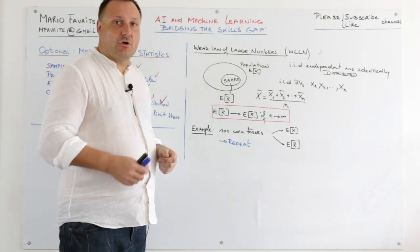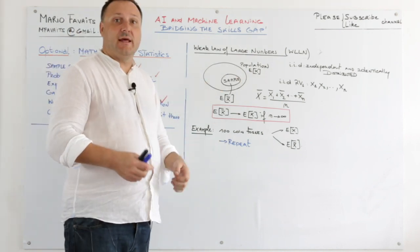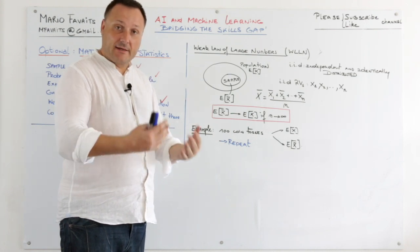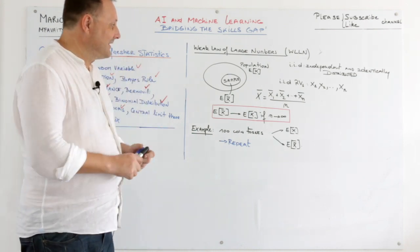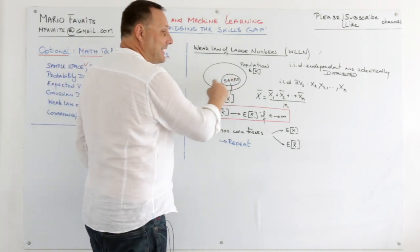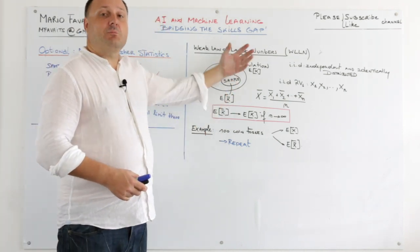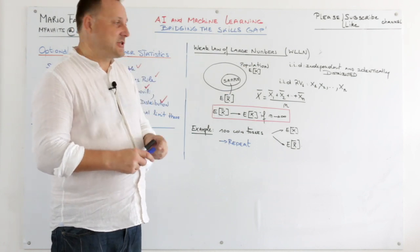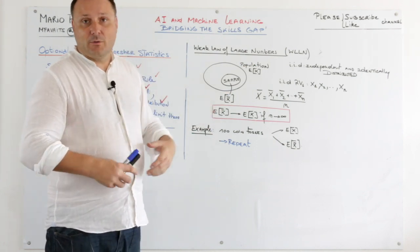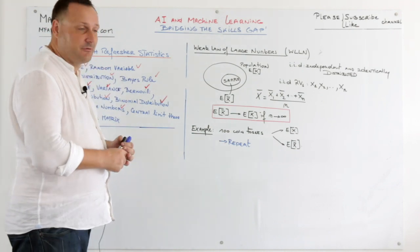But instead of going to each door and asking all these 6 million people how tall they are, basically what we can do is we can do a sample. And from the sample we can make projections to the population. And that's basically what a big chunk of statistics is for.